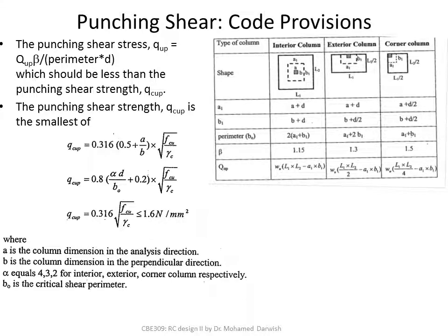The punching shear strength is the smallest of three equations. The first is 0.316 times (0.5 + A/B) times √(Fcu/γc). The second is 0.8 times (αD/B₀ + 0.2) times √(Fcu/γc). The third is 0.316 times √(Fcu/γc). All three contain √(Fcu/γc), but the multiplying factor differs. The second equation is variable depending on column location. You calculate all three values and pick the smallest.